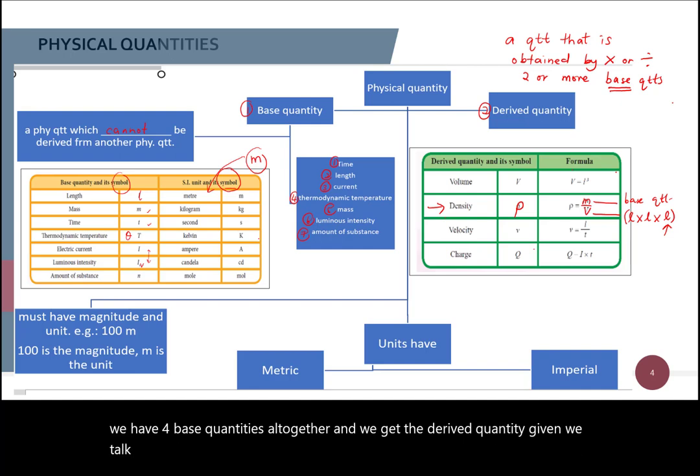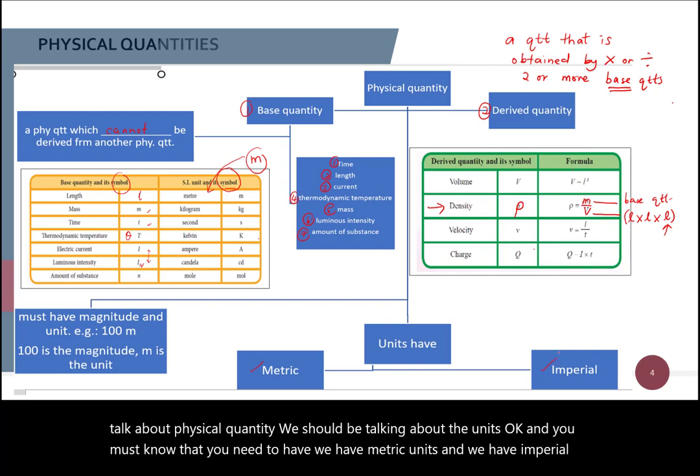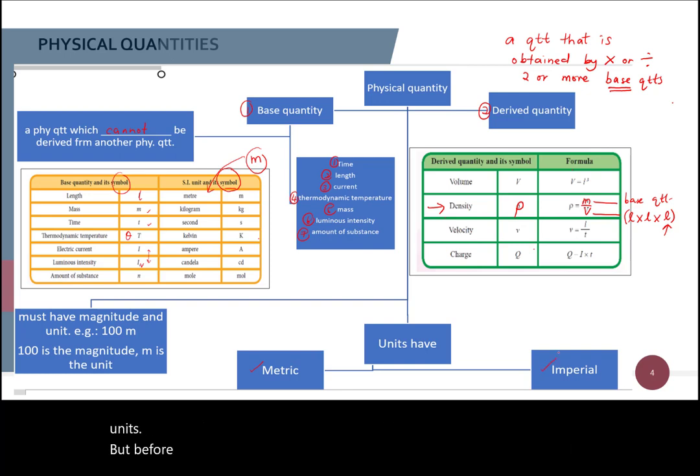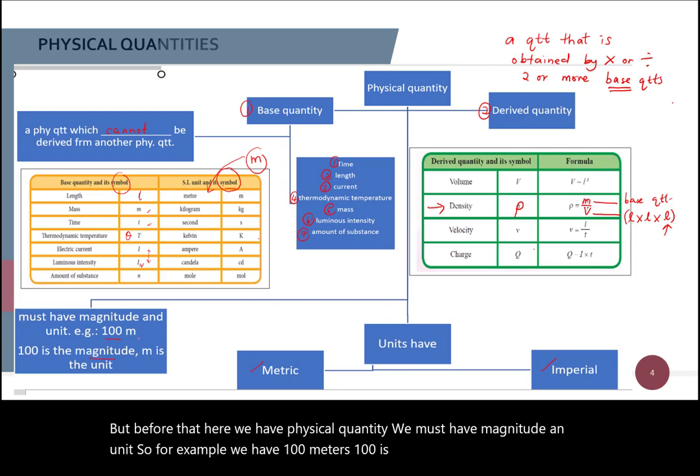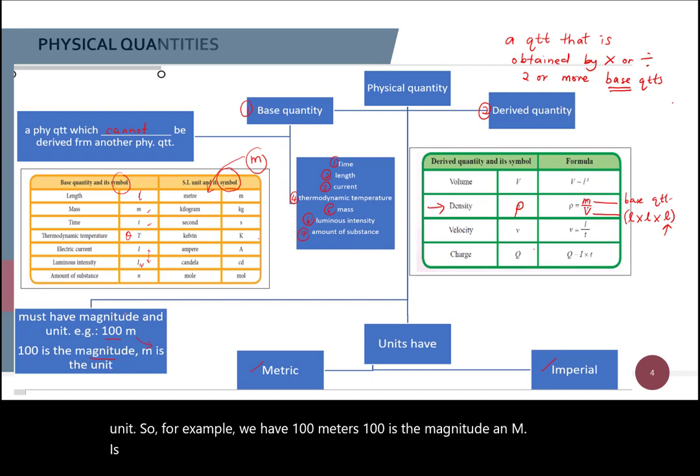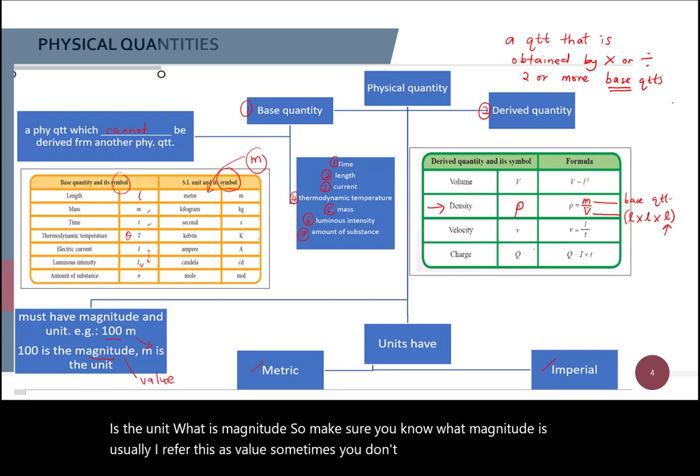Okay, when we talk about physical quantity, we should be talking about the units. Okay, and you must know that we have metric units and we have imperial units. Okay, but before that, when we have physical quantity, we must have magnitude and unit. So, for example, we have 100 meters. 100 is the magnitude and M is the unit. So what is magnitude? So make sure you know what magnitude is. Usually I refer this as value. Okay, sometimes students know how to say this one, but they don't even know what the meaning of magnitude.